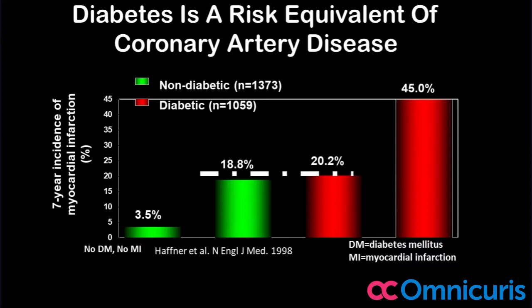— he has a mortality of around 18.8%, versus a diabetic without an MI who has a mortality of 20%. So a diabetic without MI is actually having a worse mortality than a non-diabetic with an MI. That is why it is a risk equivalent of coronary artery disease.